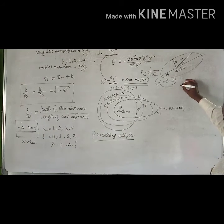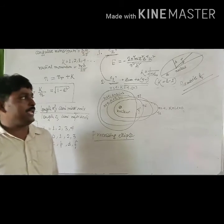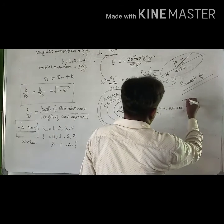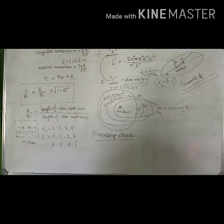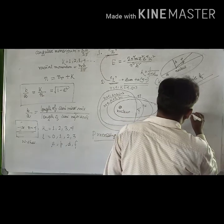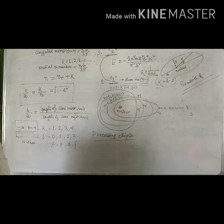Now, the demerits of Sommerfeld's theory: Sommerfeld's theory completely failed for systems having more than one electron, and Sommerfeld's theory cannot explain the splitting of several lines in the presence of a magnetic field or electric field. Sommerfeld's theory also cannot explain the relative intensities of several lines of the spectrum of hydrogen atom.